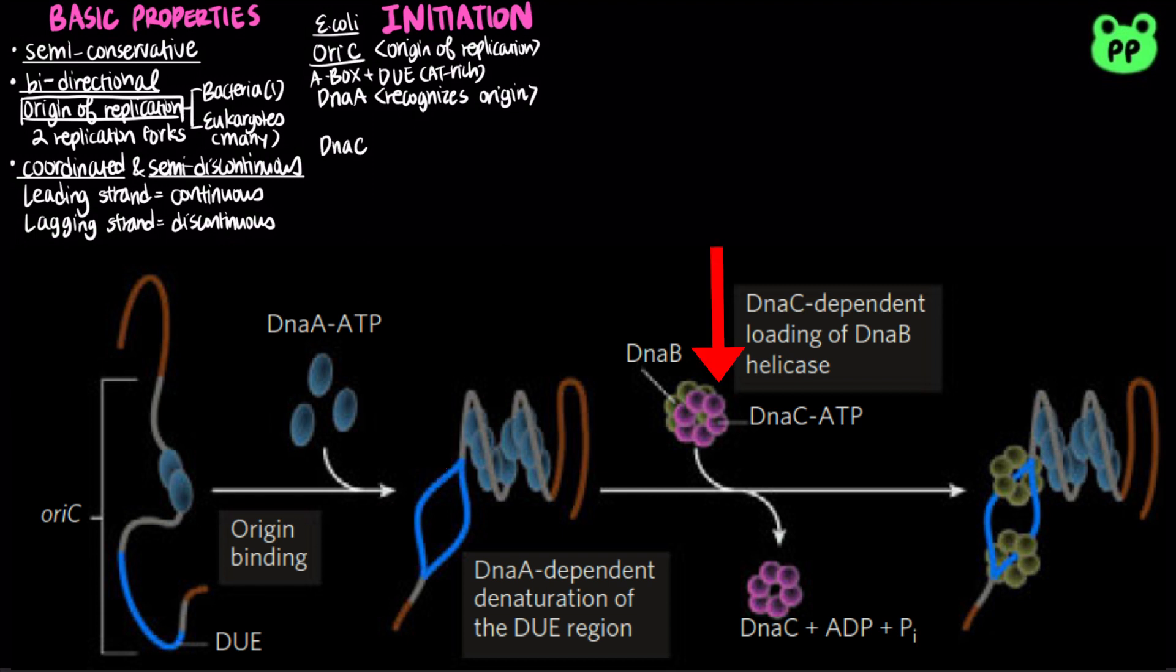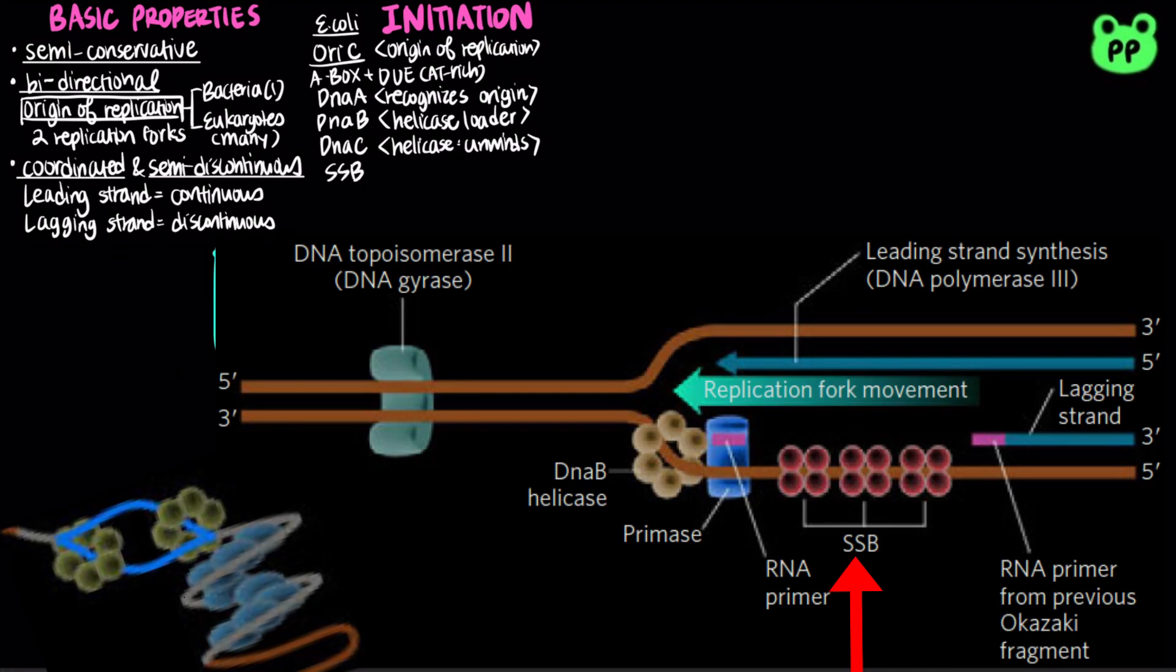Next, the DnaC protein loads the DnaB protein onto the separated DNA strands in the denatured region. DnaB serves as the helicase which unwinds DNA at the replication forks, which is the key event of replication initiation. Molecules of single-strand binding protein, abbreviated as SSB, stabilize the separated strands.